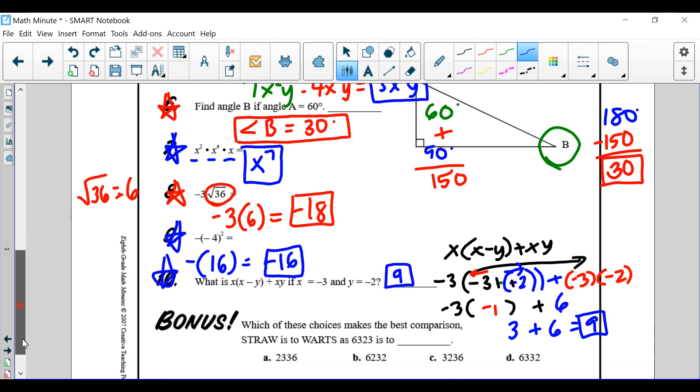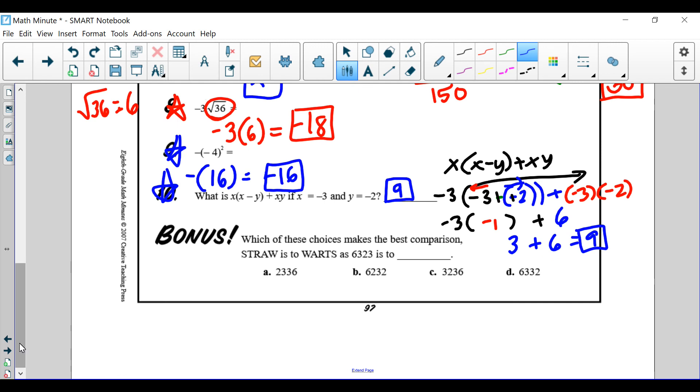Okay, finishing up. Which of the choices makes the best comparison? Straw is to warts as 6, 3, 2, 3 is to what? Well, if you notice, straw is spelled S-T-R-A-W. But warts is basically the opposite. So, we just need to find out which one is the opposite. Which one is 6, 3, 2, 3, but read backwards. And that is C. It's 3, 2, 3, 6.